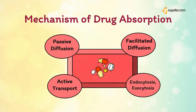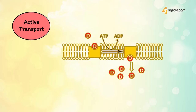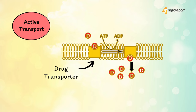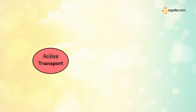In active transport, a few drugs that closely resemble the structure of naturally occurring metabolites are actively transported across cell membranes using specific carrier proteins. Energy-dependent active transport is driven by the hydrolysis of adenosine triphosphate. It is capable of moving drugs against a concentration gradient — from a region of low drug concentration to one of higher drug concentration. The process is saturable.